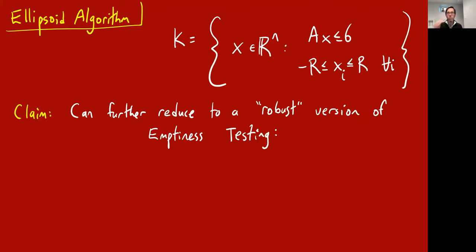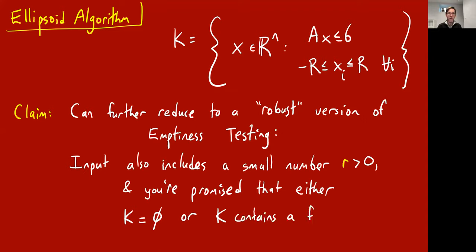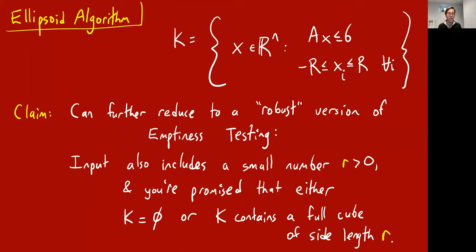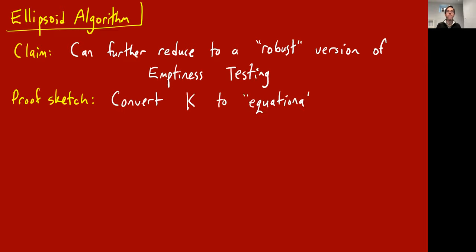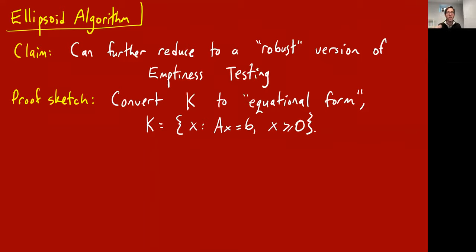Before getting into the ellipsoid algorithm, I want to claim that you can make this problem even a little bit easier by reducing it to a 'robust' version. In the robust version, the input also includes a small number r — think of it as exponentially small but positive, writable with polynomially many digits — and you're promised that either K is empty, or K is not just non-empty but actually contains a tiny full-dimensional cube of side length r. The ellipsoid algorithm solves this robust version.